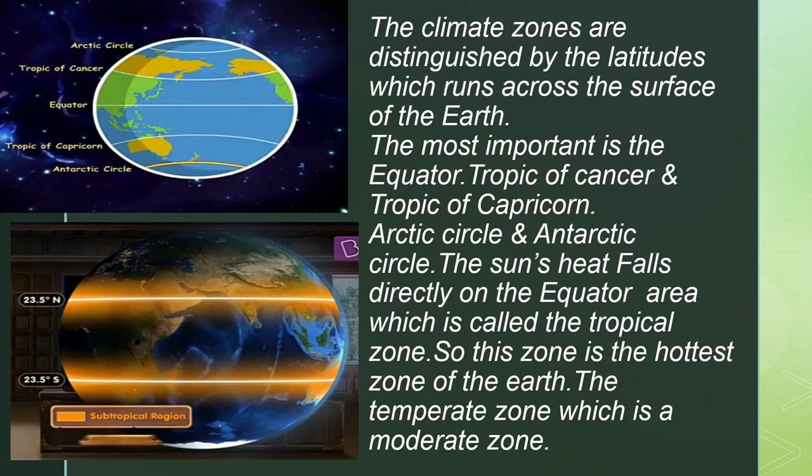The climate zone is distinguished by latitudes which run across the surface of the earth. The most important are the equator, Tropic of Cancer and Tropic of Capricorn, Arctic Circle and Antarctic Circle. The sun's heat falls directly on the equatorial area, which is called the tropical zone.